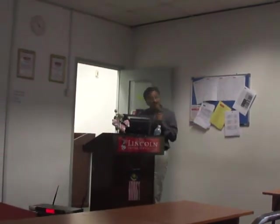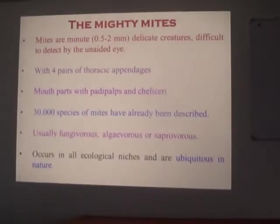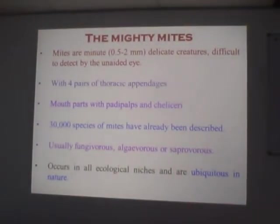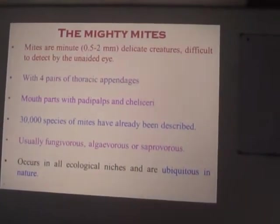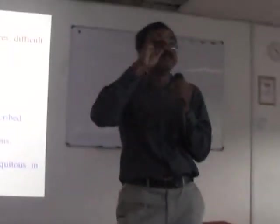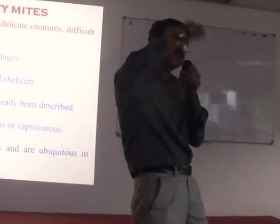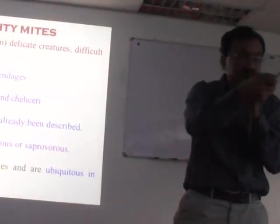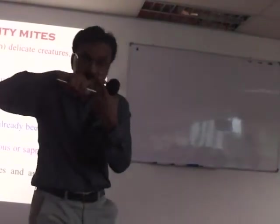Mites are minute, delicate creatures, difficult to detect by the unaided eye. They are usually with four pairs of thoracic appendages. In the animal community, there is a group in invertebrates known as Arthropoda — meaning jointed appendages. They are the first creatures to have legs, meaning they can move. This type of leg is always biramous, meaning jointed — and jointed legs are very important in evolutionary biology.